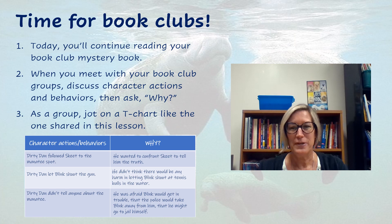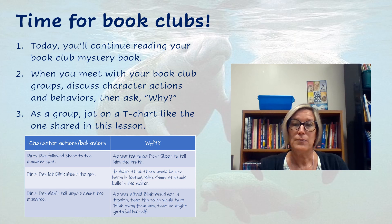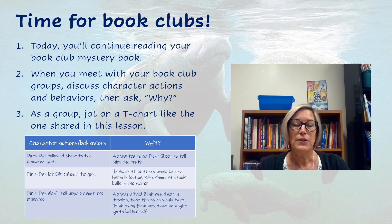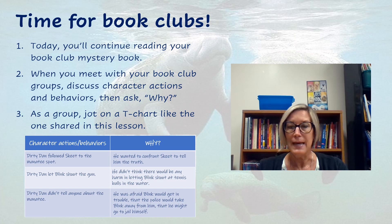You guessed it — now it's time for book clubs. Today you'll continue reading your mystery book club books. When you meet with your book club groups, discuss character actions and behaviors and then ask why. Jot down their actions and behaviors, and then as a group ask why in order to determine what is motivating the character. Maybe your teacher will give you chart paper, or you can work on a PowerPoint slide or whiteboard together. You're going to create a t-chart like the one I created, with character actions and behaviors on the left and the question why on the right — jot the actions from the story, ask why, and jot that under the why column to reveal what motivated the character.